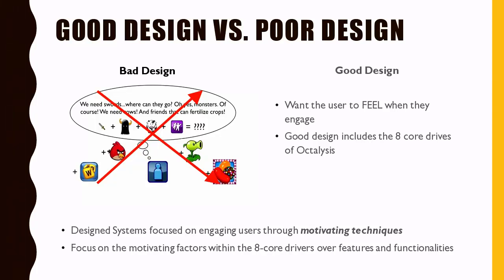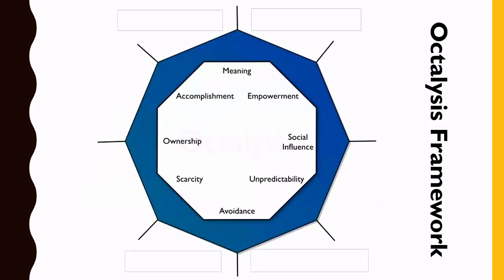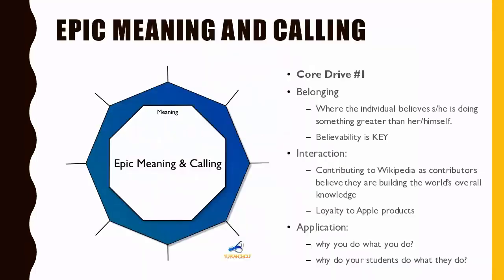Let's move into what the framework actually looks like. You'll see these eight drivers. We're going to take each of the eight drivers individually and talk about them. At the top you've got meaning, at the very bottom avoidance, and those in between. We'll go into the first one, which is epic meaning and calling.